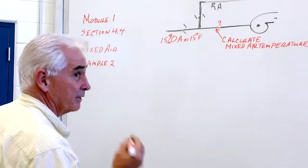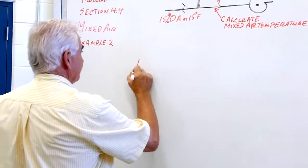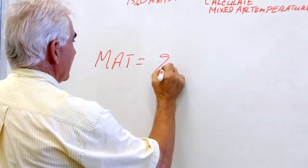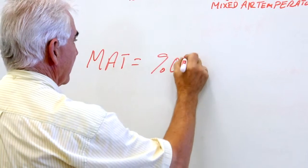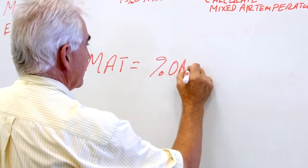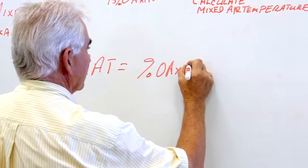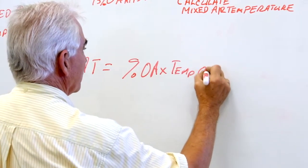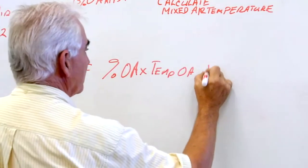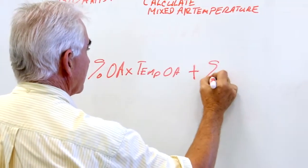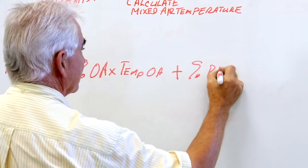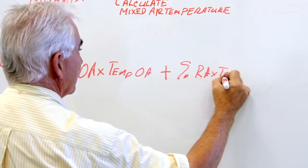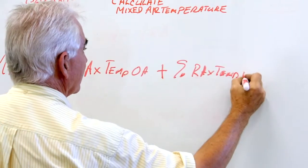Our equation for mixed air temperature is equal to the percent of outdoor air times the temperature of the outdoor air plus the percent of return air times the temperature of the return air.